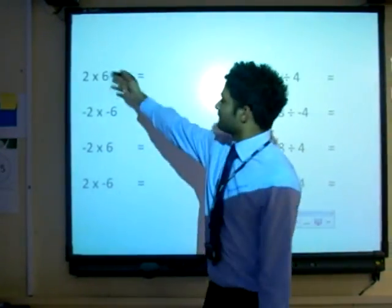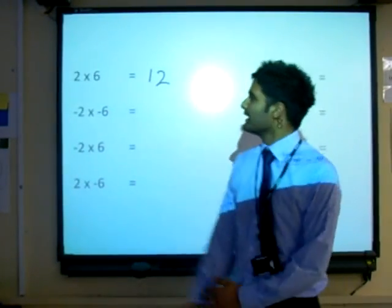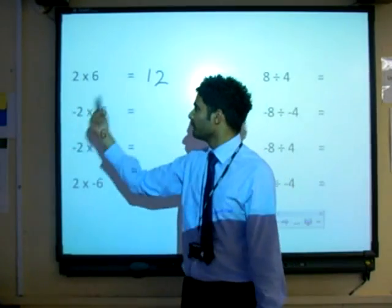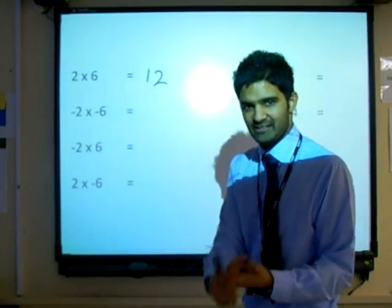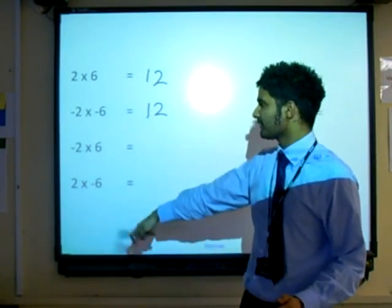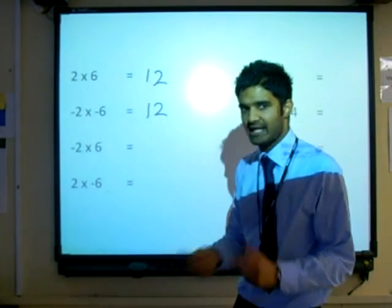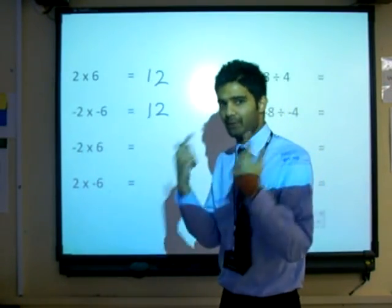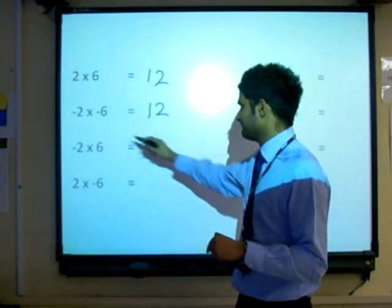Okay, so first, 2 times 6, we all know that's 12. Okay, so we've got a negative 2 multiplied by a negative 6. Negative multiplied by negative is a positive. Again, that's 12. Negative 2 multiplied by positive 6. A negative multiplied by positive is a negative. Negative 12.